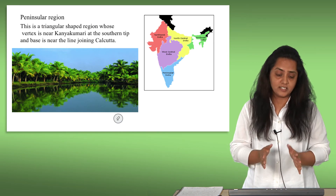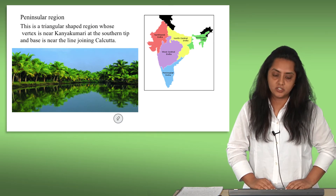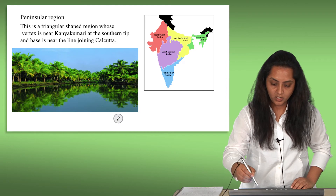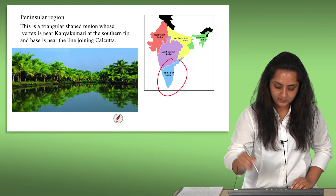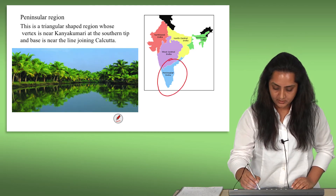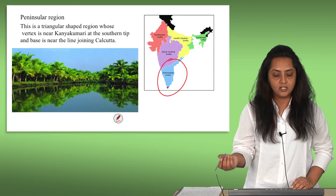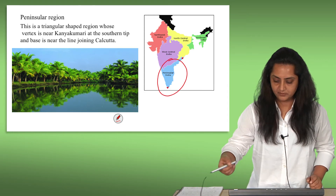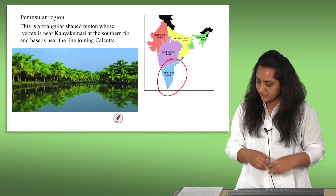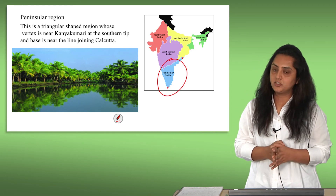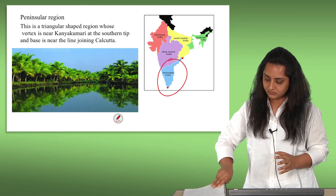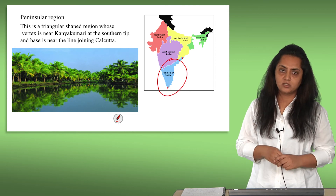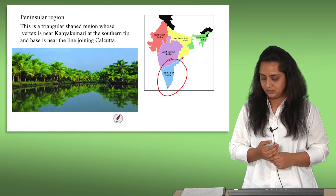Next is the peninsular region, which is a triangular-shaped region whose vertex is near Kanyakumari — the southernmost tip — and it ends near Calcutta. If you go to Kanyakumari, you can see all three beautiful water bodies from one point. There is lots of greenery and coconut trees, and that's why a lot of food in the south is based on coconut oil.